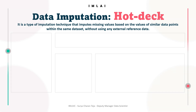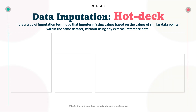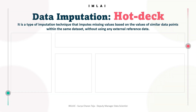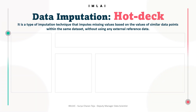The basic idea of hot deck imputation is to find the nearest neighbors of the observation with missing values, and then use the values of those neighbors to fill in the missing values. Hot deck imputation is a form of nearest neighbor imputation where the nearest neighbors are determined based on similarity measures such as distance, similarity score, or other relevant criteria.